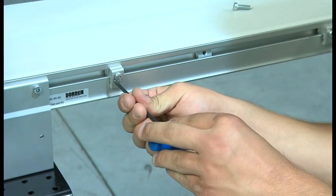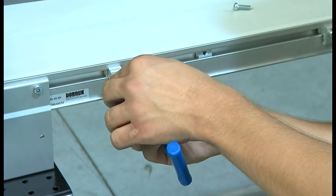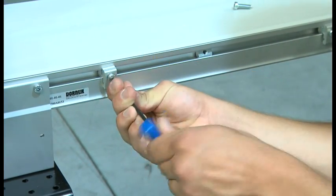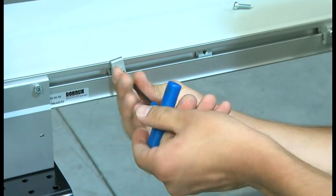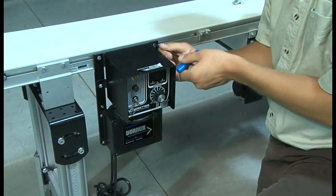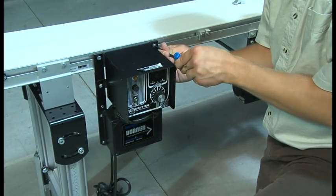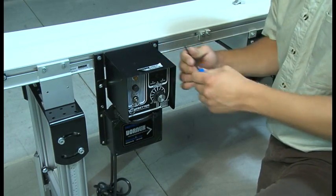Dorner's motor controls, as well as other accessories, are easily mountable using the T-slots on the frame of the conveyor. Place the motor control in the appropriate space and tighten the screws back into the T-slot.